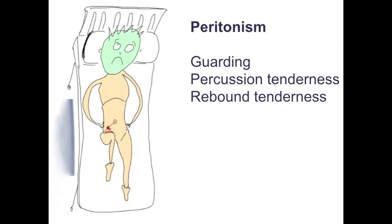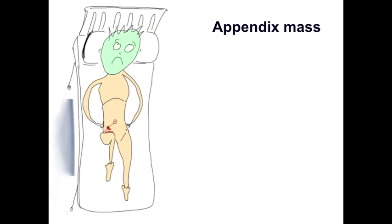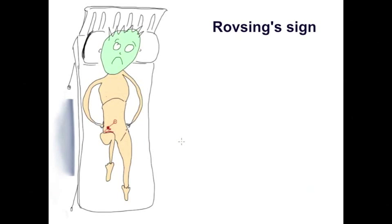On occasion you may be able to palpate an appendix mass, which is essentially a ball of inflammatory omentum, appendix, maybe cecum, and terminal ileum. A positive Rovsing's sign is when the patient experiences pain in the right iliac fossa when you palpate the left iliac fossa. The psoas sign may be elicited by asking the patient to lie on their left side and passively extending the right hip — pain on the right side of the abdomen indicates a positive psoas sign, due to irritating inflamed tissue overlying the right psoas muscle.